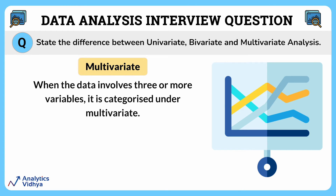Finally, multivariate is like looking at many things all at once. In multivariate data, you are not just focused on two things — you are studying three or more things together. For example, if you want to understand how the popularity of four different advertisements on a website depend on various factors like age, gender, and location, that's multivariate data.